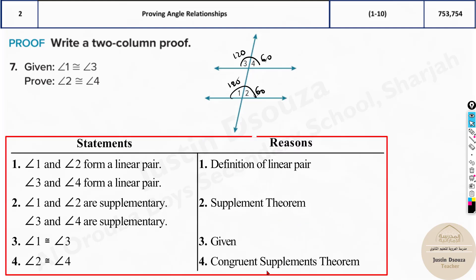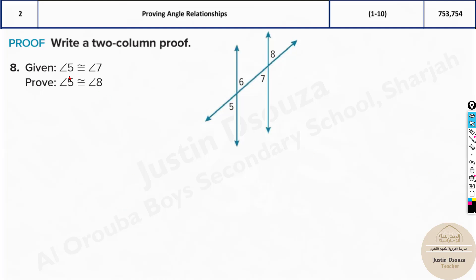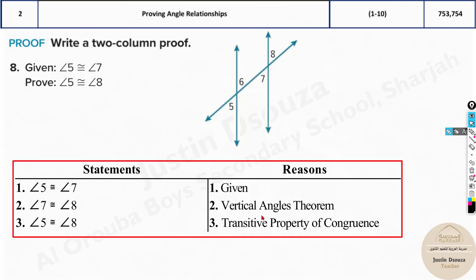Next, angles 5 and 7 are equal — this is the vertical angles case. Vertical angles are congruent, so if angle 5 is 40 degrees, angle 7 is also 40 degrees. But they asked about angles 5 and 8 — not 5 and 6. Since all vertical opposite angles are equal to each other, by the transitive property, if 5 equals 7 and 7 equals 8, then 5 and 8 must also be equal.